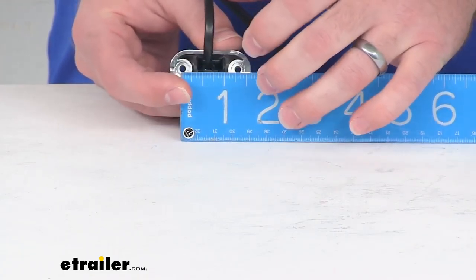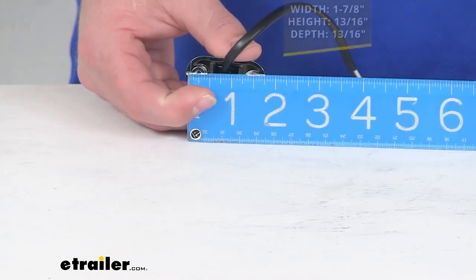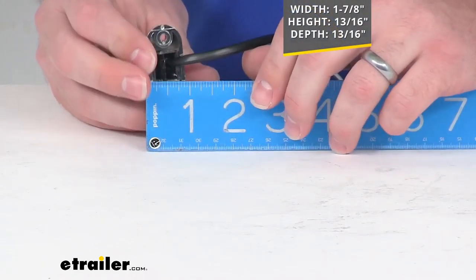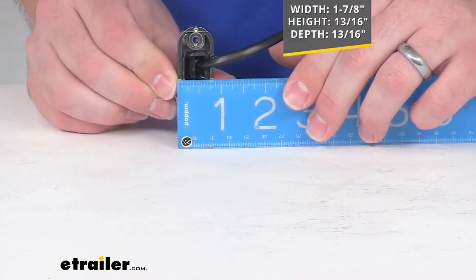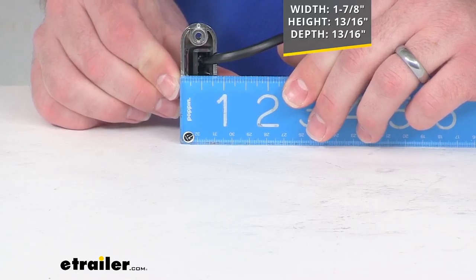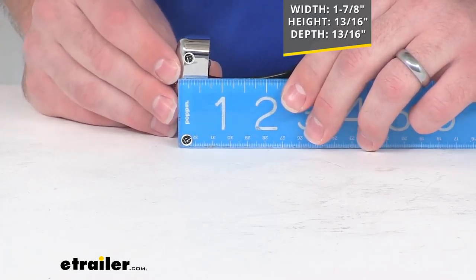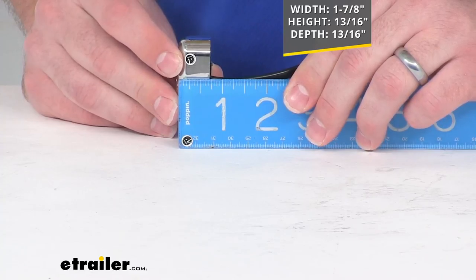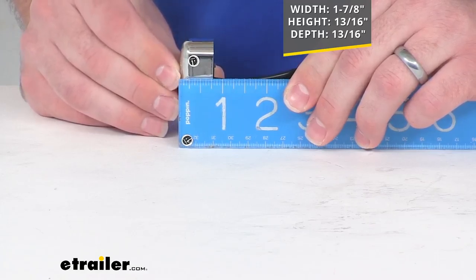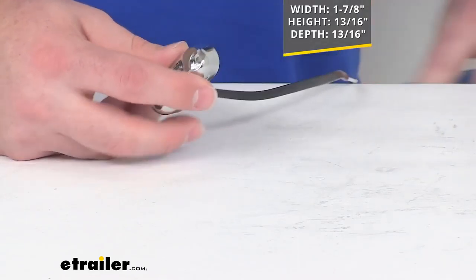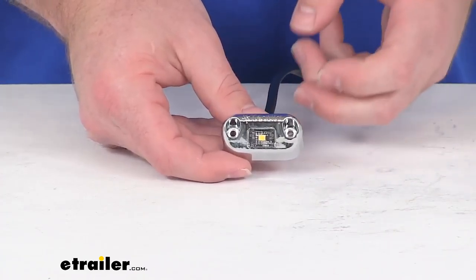As far as our measurements go, this is right at one and seven eighths, just shy of two inches wide. Our height is going to be approximately 13/16ths, just shy of seven eighths, and then our depth we're looking at again right at 13/16ths of an inch, just over three quarters of an inch.